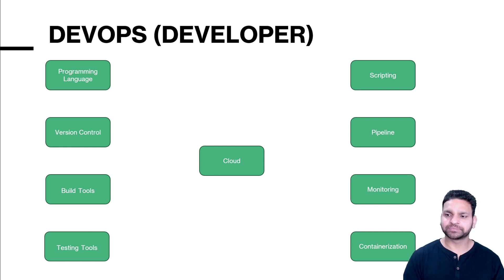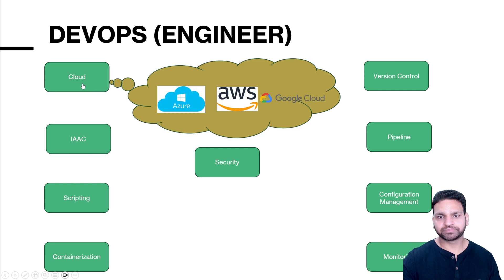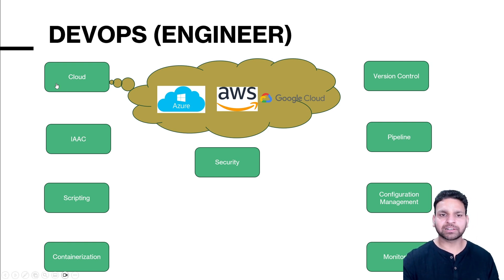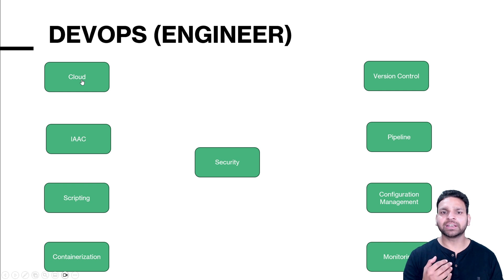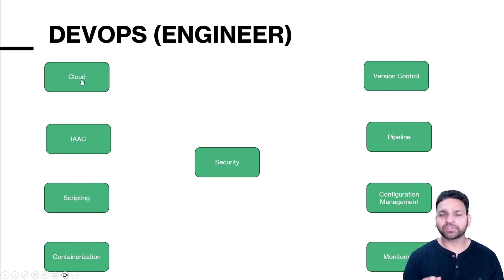Now for the DevOps engineer profile: first, you should know your cloud — pick one: AWS, Azure, GCP, or any other. Cloud is a must for a system engineer, DevOps engineer, infrastructure engineer, or SRE. Next, how will you deploy resources? You can use the portal, but that doesn't always work. You need to learn scripting and infrastructure as code so you can mass-deploy your infrastructure. For example, if 50 servers need to be deployed, you can't do that from the portal — it would take ages.